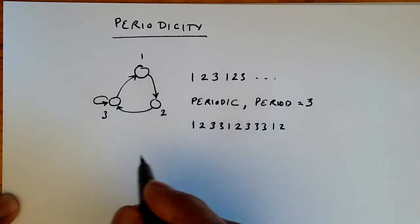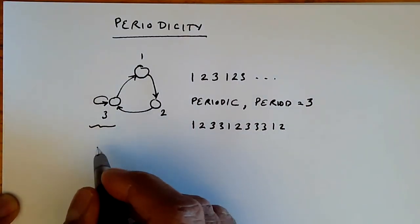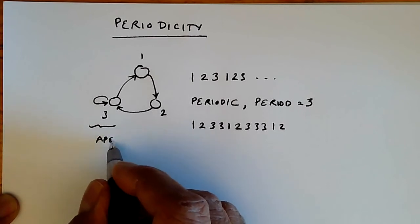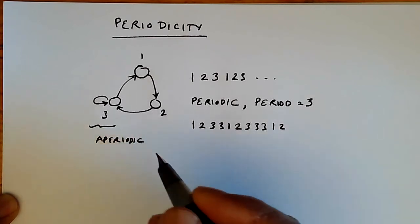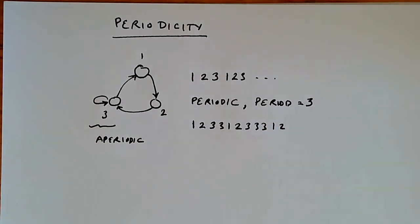And so a self-loop makes all states in this chain aperiodic.